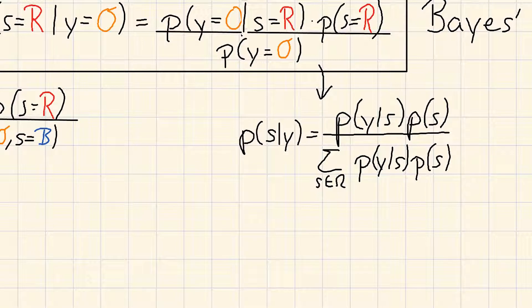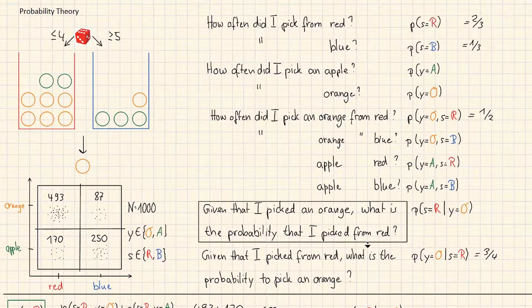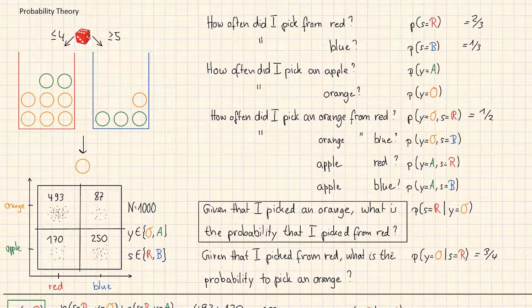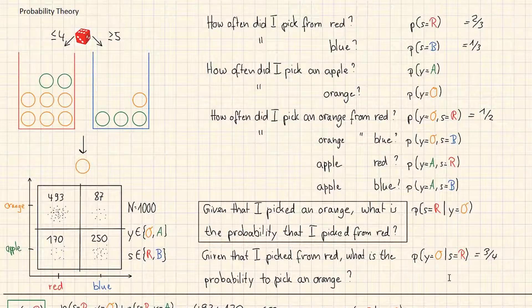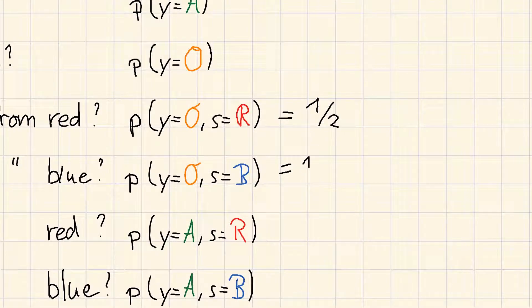Are we now able to solve our question? We just apply Bayes' rule. We need to plug everything into our equations now. First let us calculate all the different probabilities that we need for this calculation.